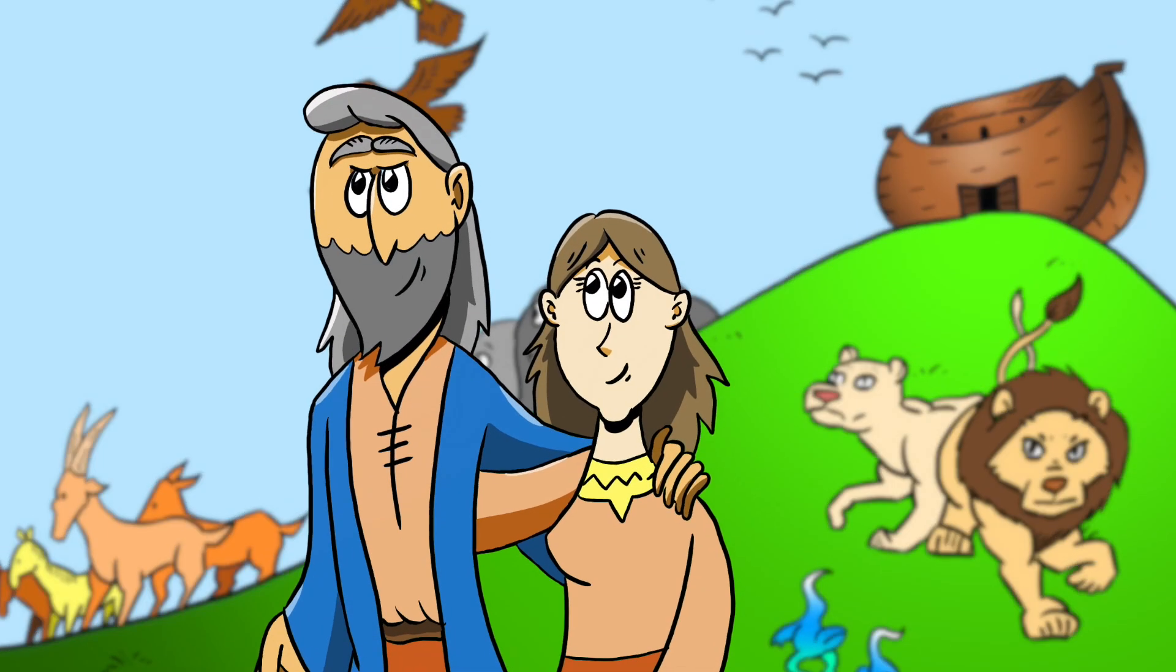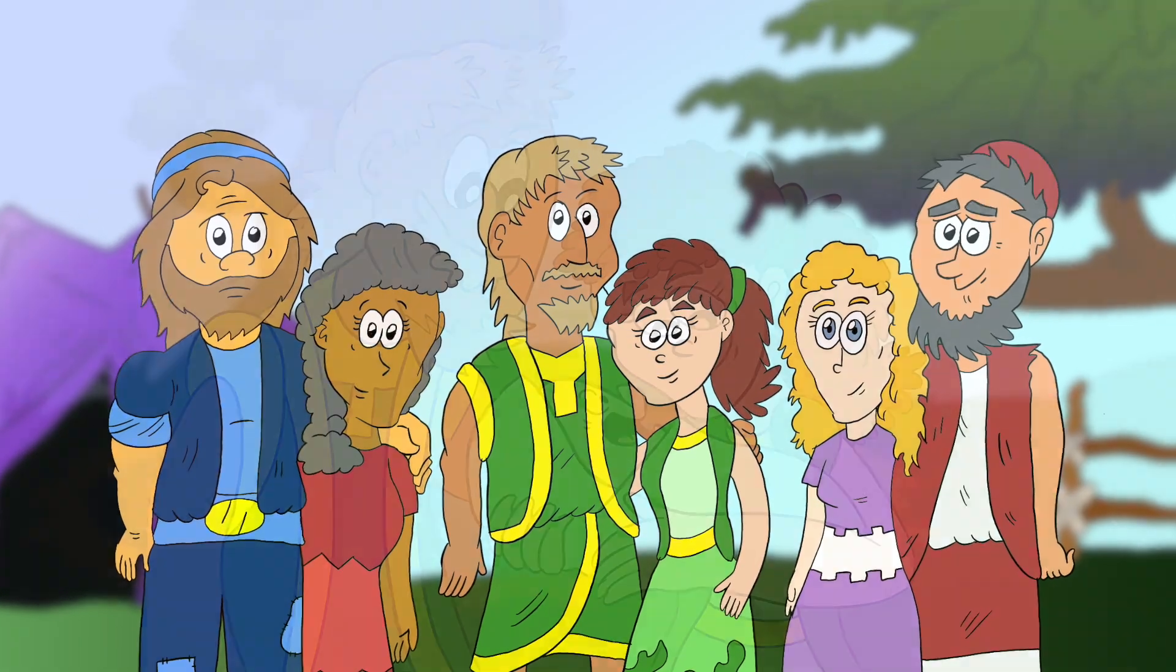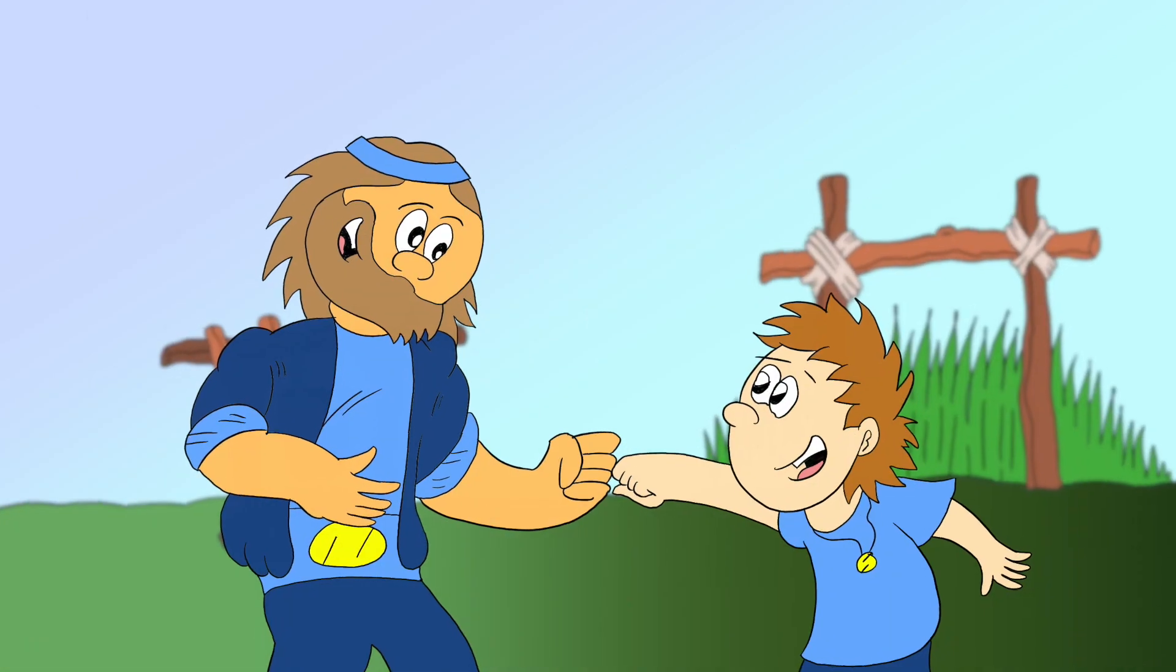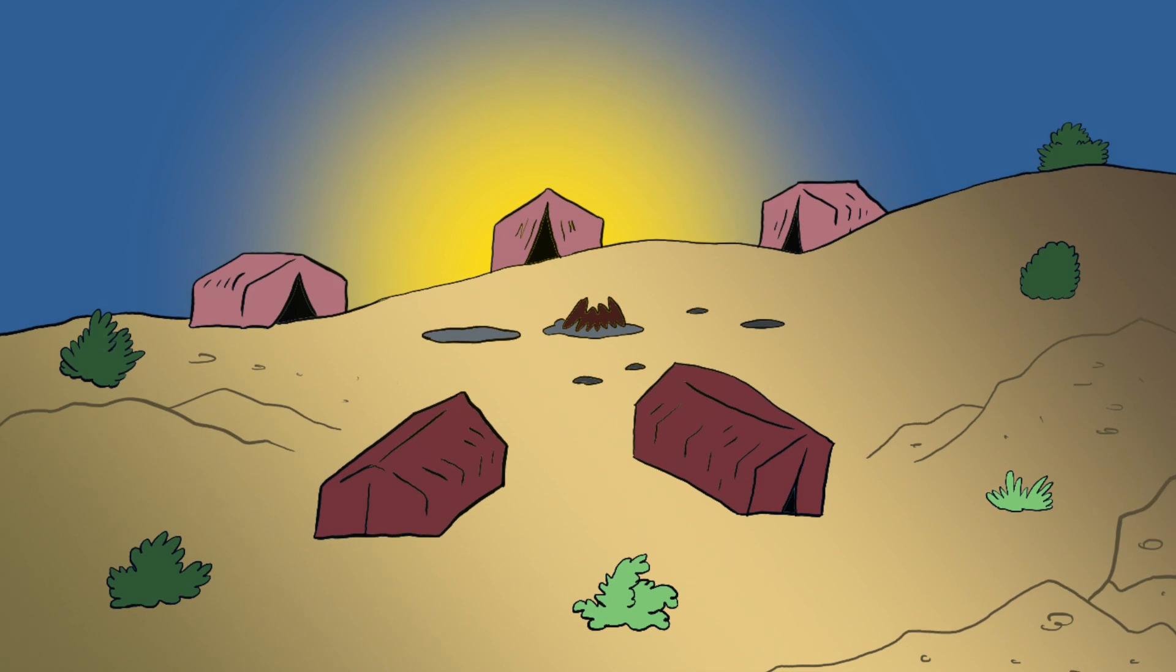After the flood, the only people on the earth were Noah, his wife, his sons, and their wives. Noah's sons and their wives had children, and their families grew so that after a while, there were many people on the earth again.